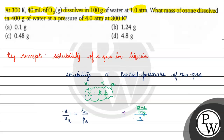We need to find how much ozone is dissolved in 400 gram of water. In the first case, the partial pressure is 1 atm. In the second case, the partial pressure is 4 atm.